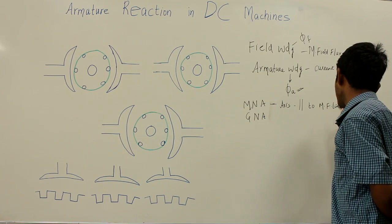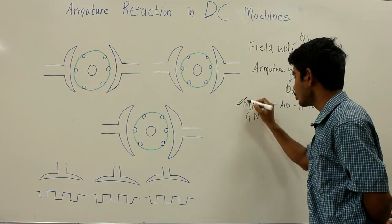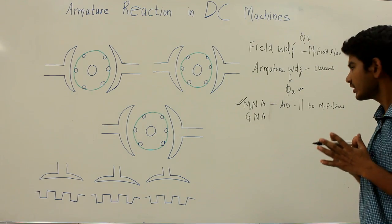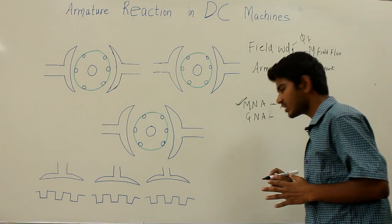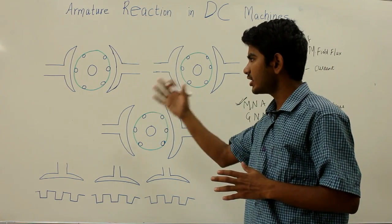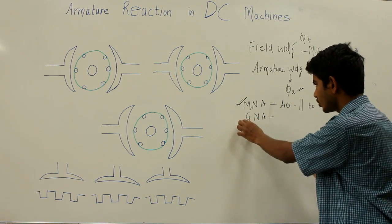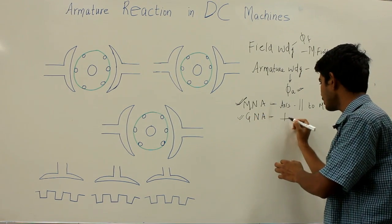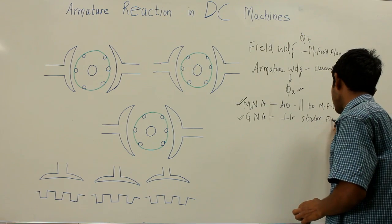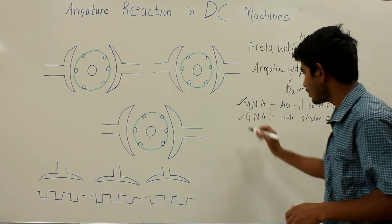When the armature conductors move parallel to the magnetic flux lines, no EMF is generated — that axis is known as the magnetic neutral axis. The geometric neutral axis is that axis which is perpendicular to the stator field axis. These are the two axes we need to know before going into the greater details of armature reaction.